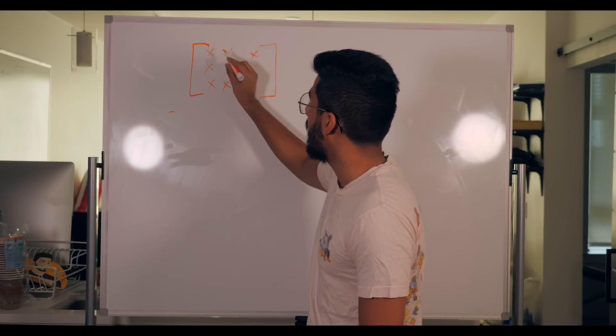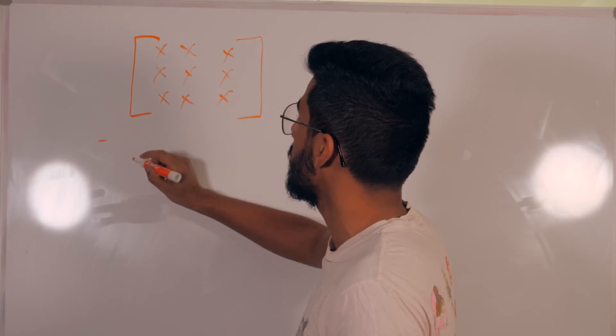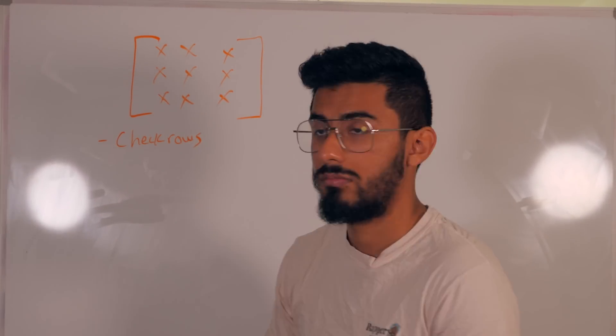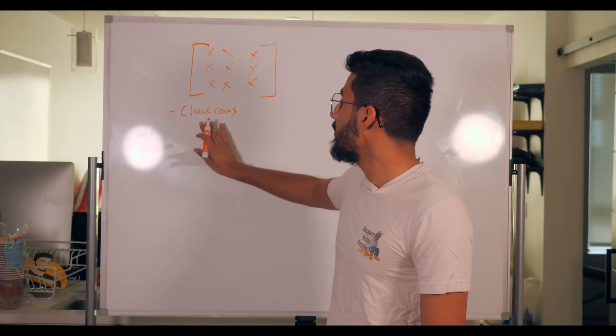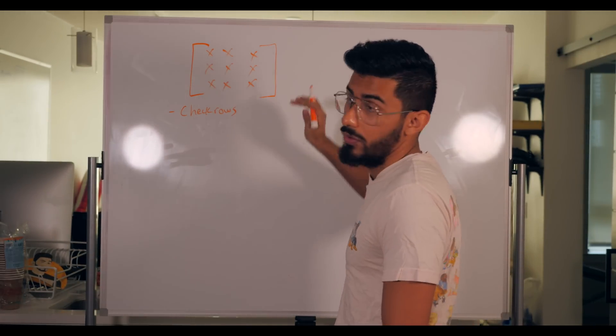So that means that I'm gonna create like a function, and I'll have one function that'll just be called like check rows. Pretty simple, right? So I'll write one function, and all that function's job is to check the rows. That's it.